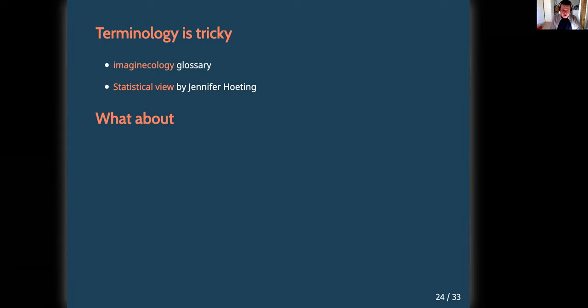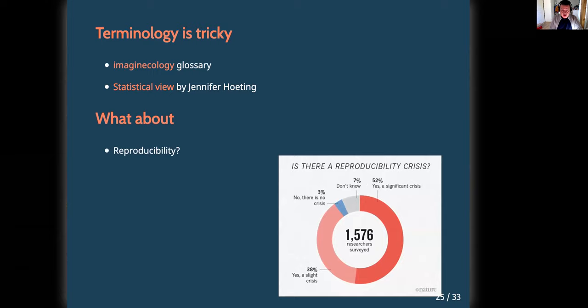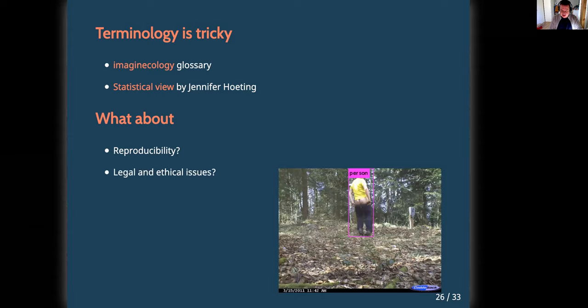Along the way, I asked myself a lot of questions. First, about reproducibility: training a model is like cooking, with its share of improvisation, and I wonder what we can do to make this process reproducible. Second, there are legal and ethical considerations that should be raised when we analyze pictures on which our species puts itself on stage. I don't have the answers to these considerations, but that's something we should think of.